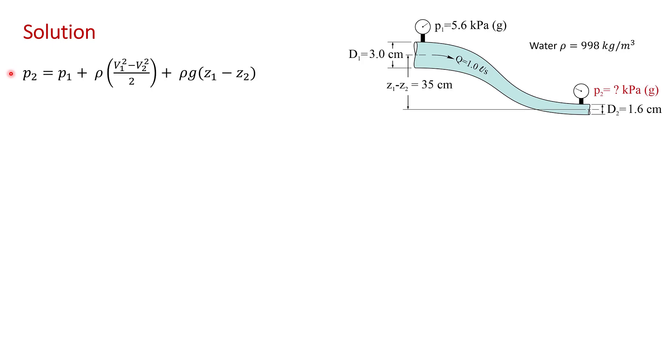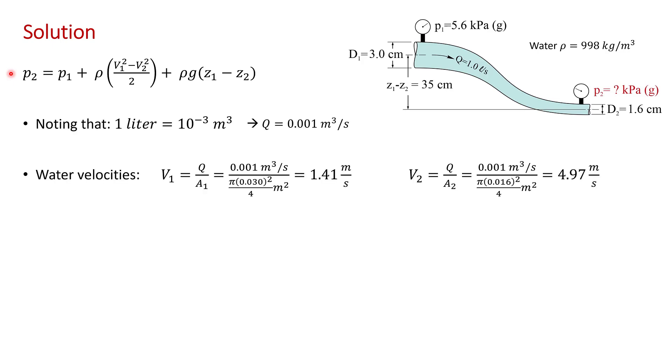Here, I've just rewritten our expression for P2 from the previous page. You're told in the problem statement that the volume flow rate is 1 liter per second, but we need that in cubic meters per second. So noting that 1 liter is 10 to the minus 3 cubic meters,